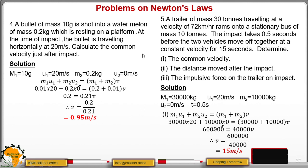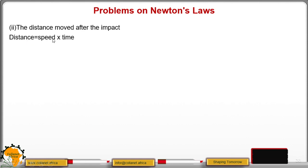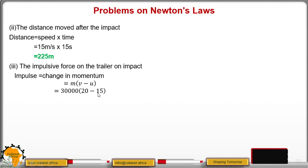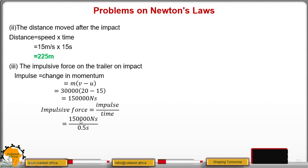Then we move to the second part: the distance moved after the impact. Distance equals speed times time. We have speed of 15 meters per second and time of 15 seconds, so distance is 225 meters. Then the impulsive force on the trailer at impact: the change in momentum equals M times (v minus u), so 30,000 times (20 minus 15) equals 150,000 newton-seconds. That is the impulse. To get the impulsive force, we divide by the time of impact: 150,000 divided by 0.5 seconds gives an impulsive force of 300,000 newtons.